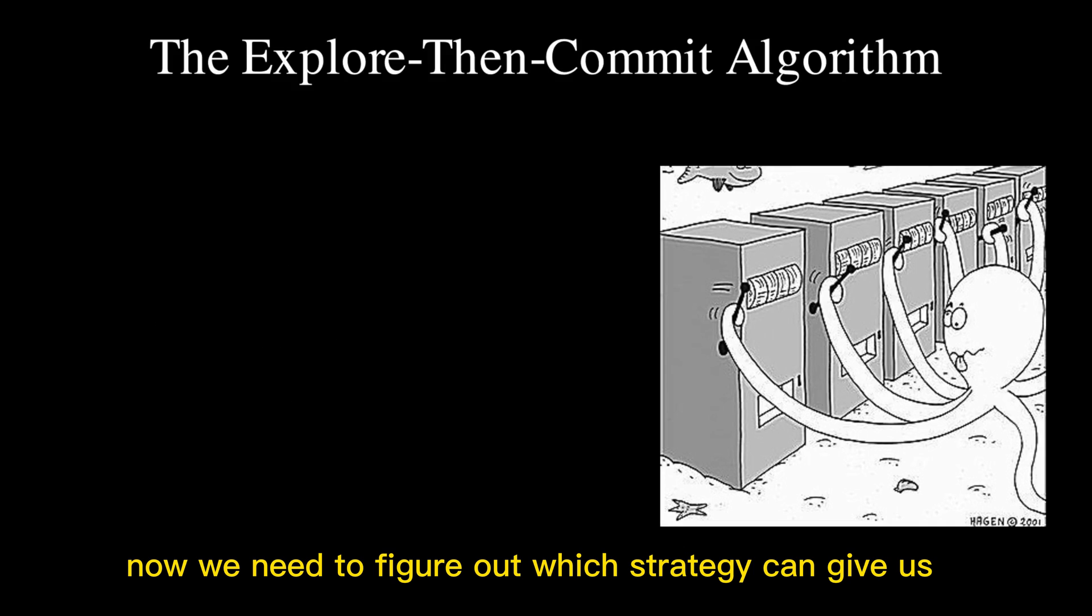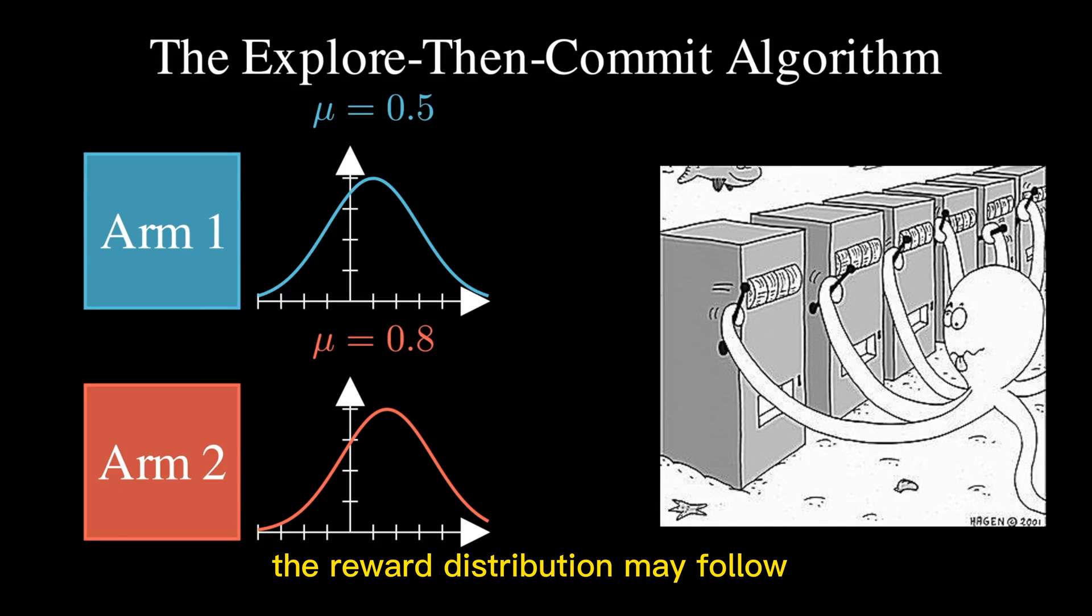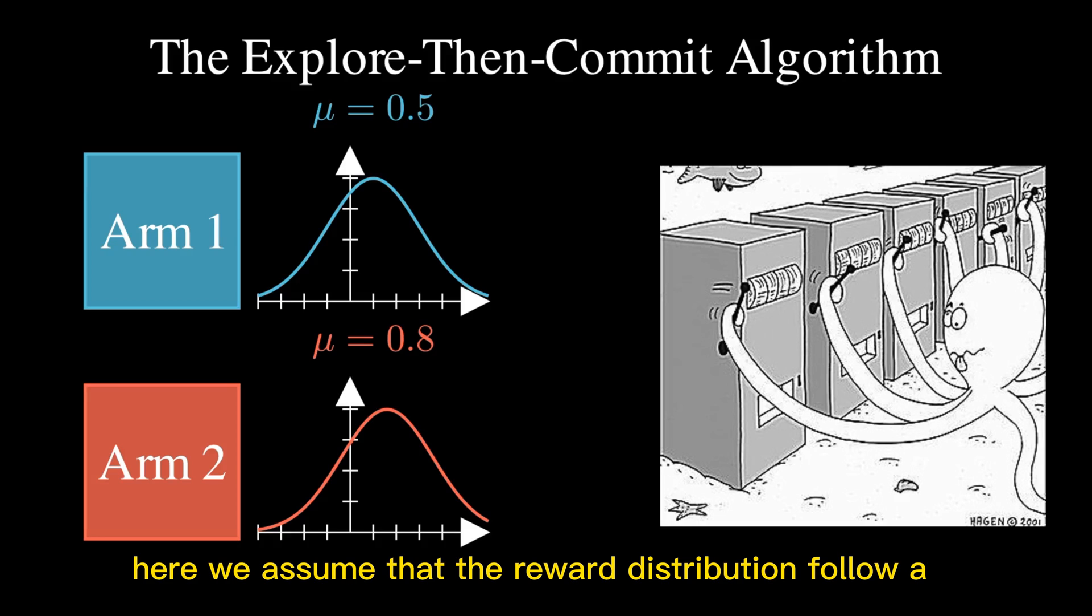Now we need to figure out which strategy can give us the best reward. The simplest algorithm is the ETC, Explore-Then-Commit algorithm. Let's assume that we have two arms. Depending on your use case, the reward distribution may follow any kind of distribution. Here we assume that the reward distribution follows a 1-subgaussian, where arm 1 has a mean of 0.5 and arm 2 has a mean of 0.8.